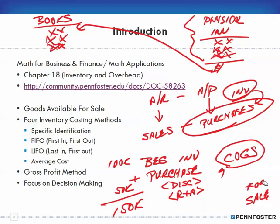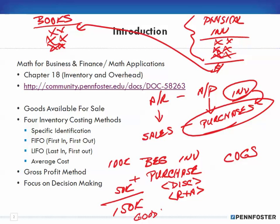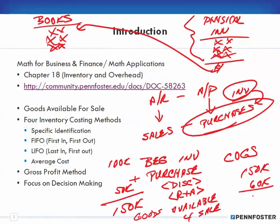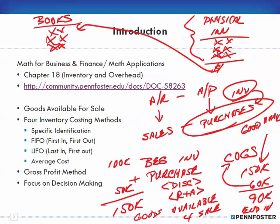To recap: I started with beginning inventory of $100,000, purchased an additional $50,000, so I have $150,000 of goods available for sale. If I sell $60,000, my ending inventory is $90,000, my cost of goods sold is $60,000, and my goods available for sale is $150,000. With that, I'm going to stop here and in the next video I'm going to start on the different inventory methods.